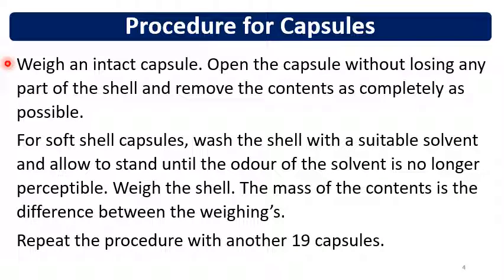The procedure for capsules is: weigh an intact capsule, open the capsule without losing any part of the shell, and remove the content as completely as possible. For hard gelatin capsules, weigh the intact capsule, then open it and weigh the powder content. For soft gelatin capsules, wash the shell with a suitable solvent and allow to dry until the odor of the solvent is no longer perceptible, then weigh the shell. The mass of the content is the difference between the intact capsule weight and the shell weight.